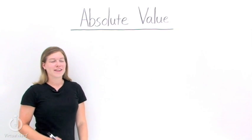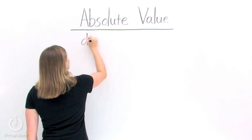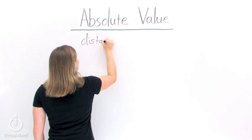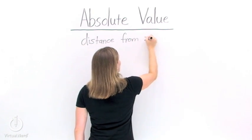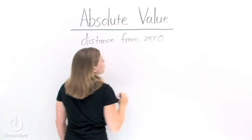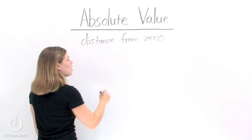So what is absolute value? Absolute value is the distance or number of units a number is away from 0 on the number line. So to find absolute value, all we need to do is find out how far away the number is from 0.